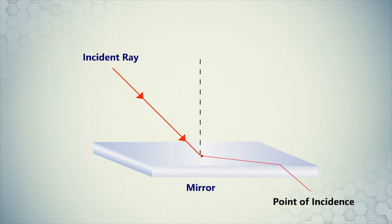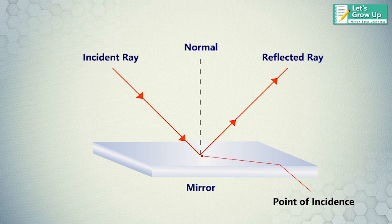Reflected ray. The ray of light which is sent back by the mirror from the point of incidence is called reflected ray. Normal. A line perpendicular or at the right angle to the mirror surface at the point of incidence is called normal.